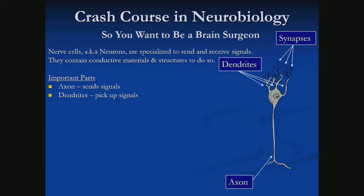Going back to the function example, the dendrites would be our input, our parameters, our arguments. And last, we have the synapses. For each dendrite, there is a synapse, and this controls how much signal flow we get across that dendrite — how much we care about that parameter.